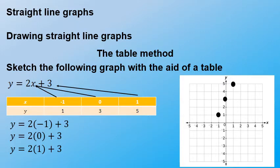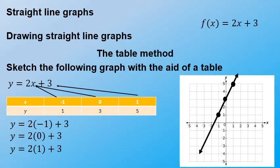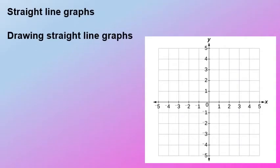Let's have a look at our Cartesian plane. If I plot negative 1, 1 — that's there; 0, 3 — there; and 1, 5 — there. You just connect and extend. Remember to extend your graph — don't just join from the first dot to the last dot, because that graph continues to positive and negative infinity. Also, get used to f of x notation — in grade 10 we use f(x) equals 2x plus 3, but f(x) is just y, used to name that graph.